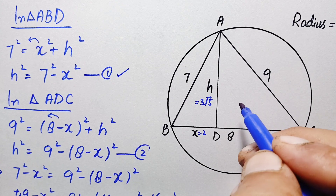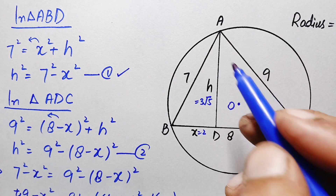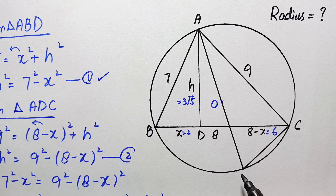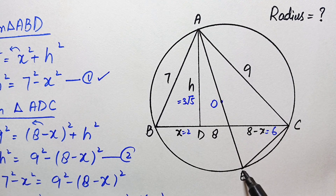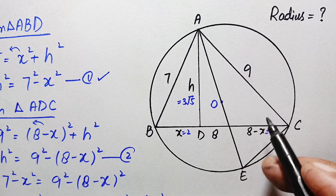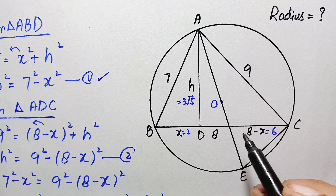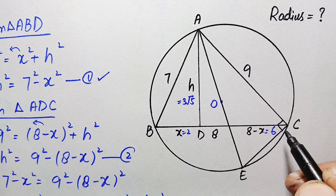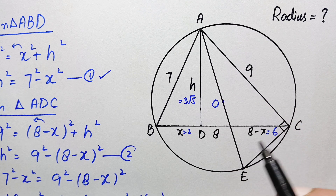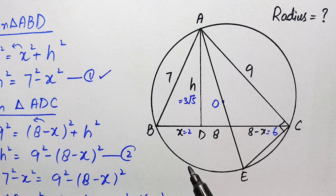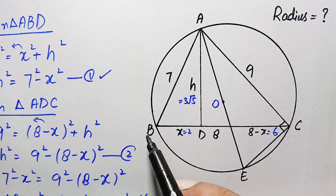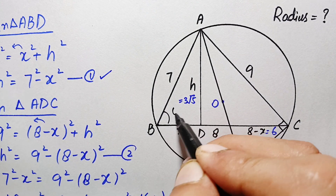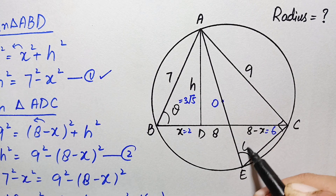Next, let us mark the center O of the circle. We join A with O and extend this line segment to a point E on the circle, making AE a diameter. We also join point E with point C. As we know, in a semicircle the angle in front of the diameter is always a right angle — so angle ACE is 90 degrees. AE is a diameter of the circle.